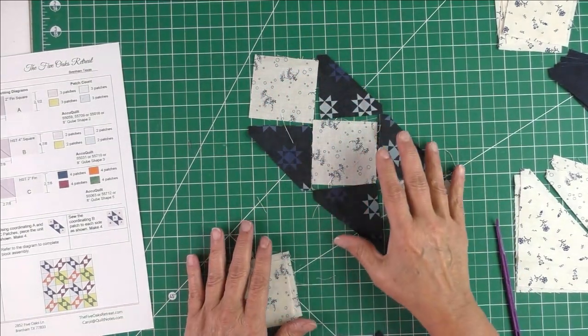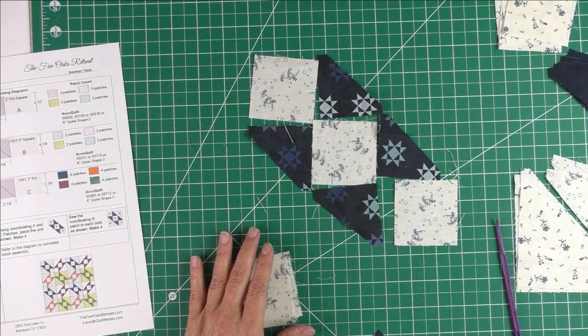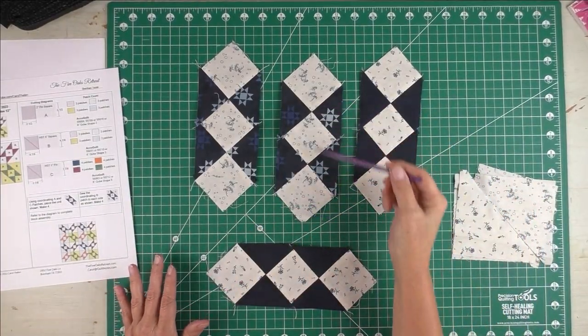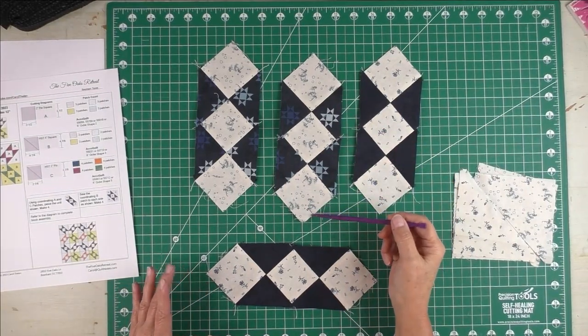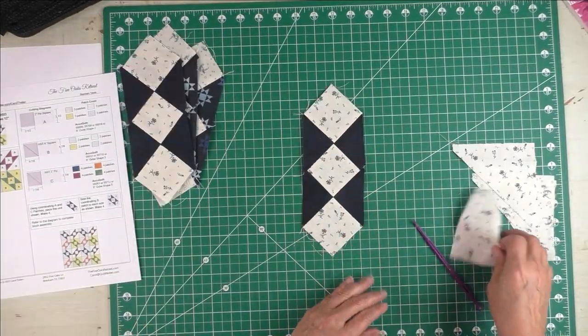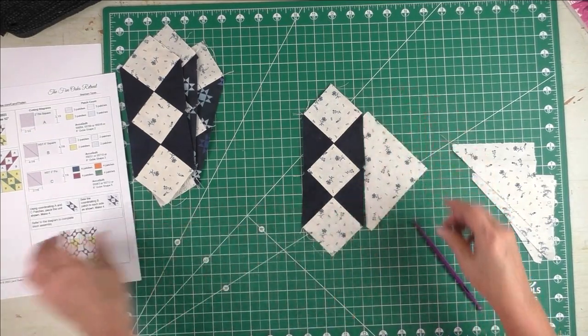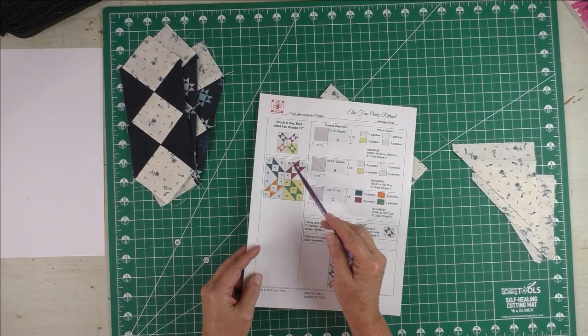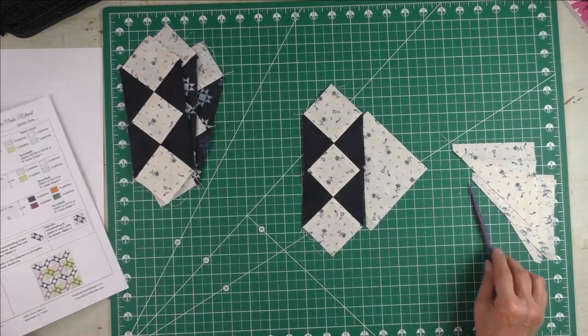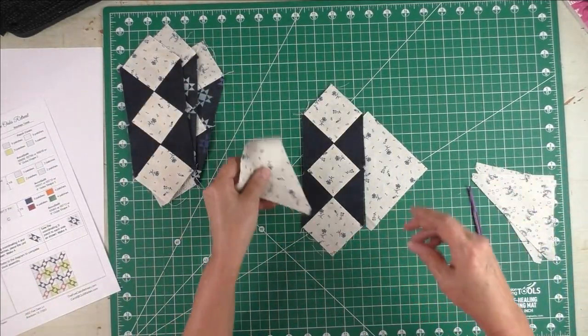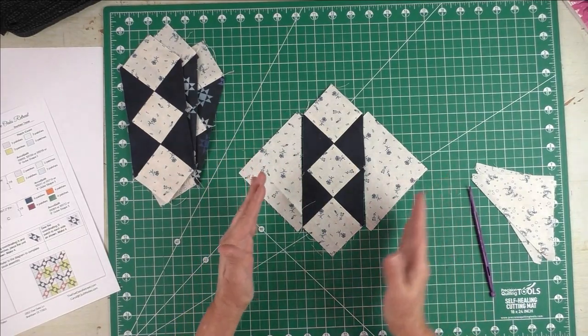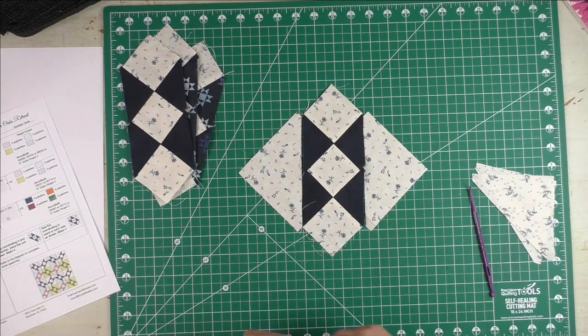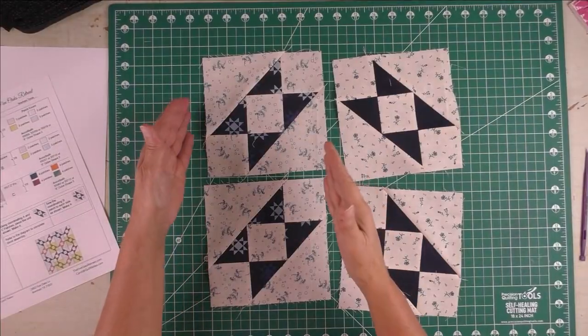Here are the diagonal units or the fan blades, whatever you want to call them. To finish off this unit—we're making four small blocks—we just simply add the large half-square triangles to the side, and then we have our one-fourth of the block. So I'll do that now. The triangles have been added.